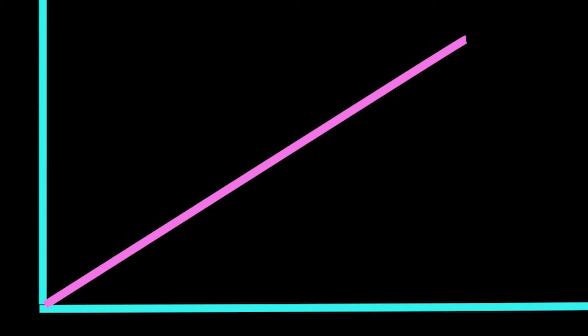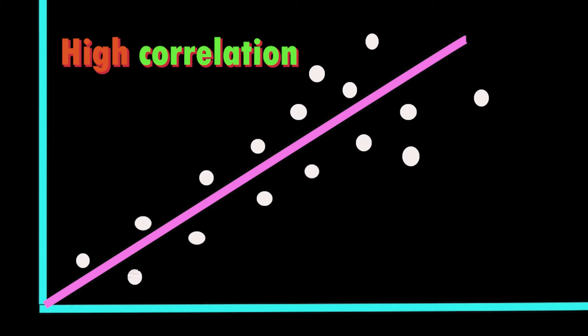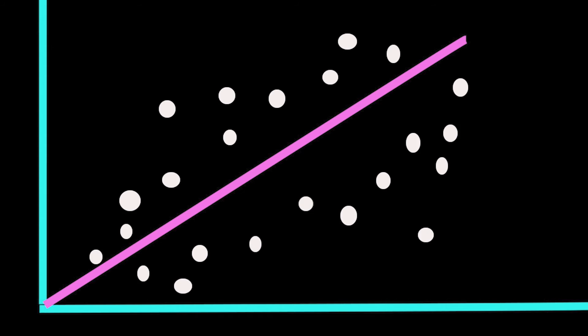If all the points are closer to this line the absolute value of correlation coefficient is high. This is also a good value. If these plots are spread far from this line the absolute value of our correlation coefficient is low.